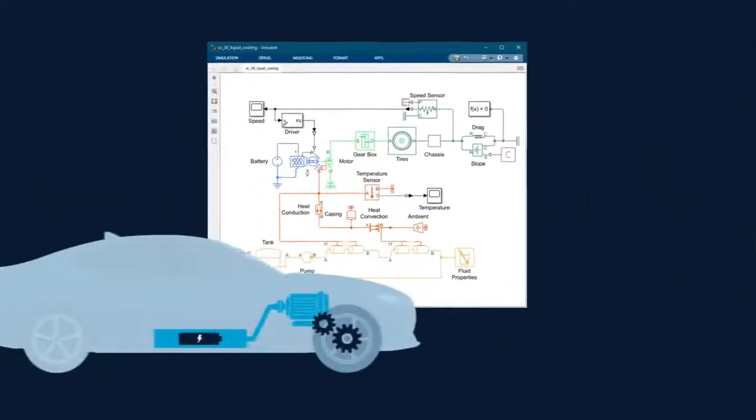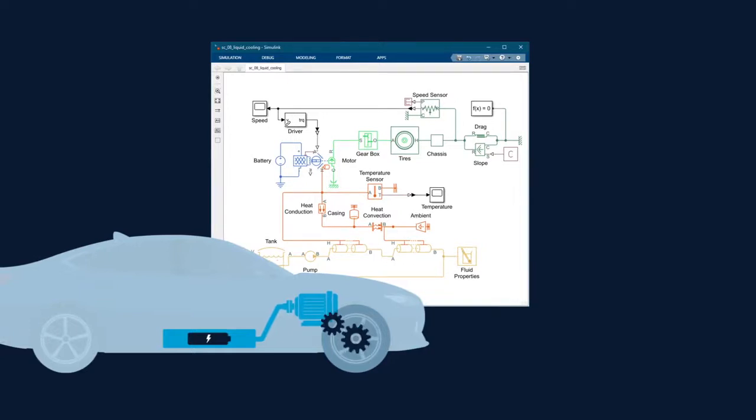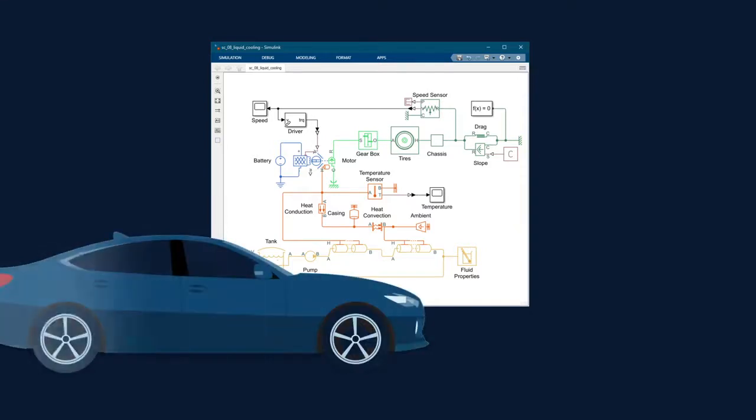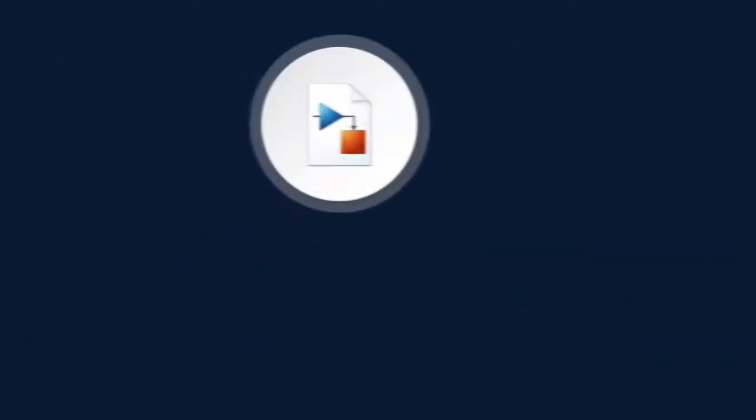In just a few minutes, we used Simscape to size motors and cooling systems with an electric vehicle model containing the battery, motor, drivetrain, and the wheels. Even better, we could use optimization algorithms and let MATLAB find the best design for us.